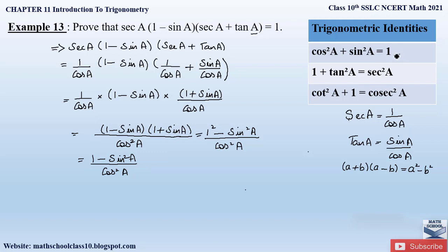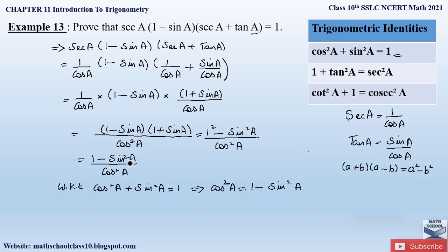In this problem we apply the first identity: cos squared A plus sin squared A equals 1, which can be rewritten as cos squared A equals 1 minus sin squared A. Substituting this in the numerator, 1 minus sin squared A becomes cos squared A. So we have cos squared A divided by cos squared A. The cos squared A in the numerator and denominator cancel, giving us 1. Hence the left hand side equals the right hand side, which is 1. Hence proved.